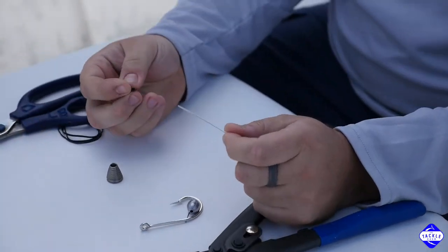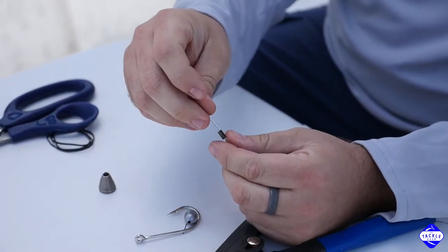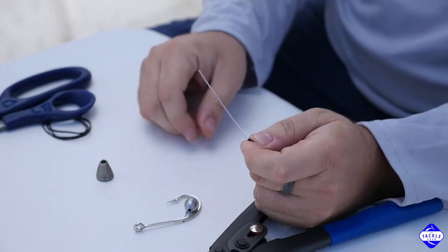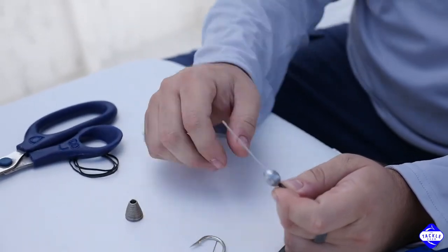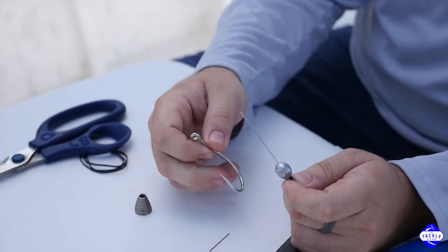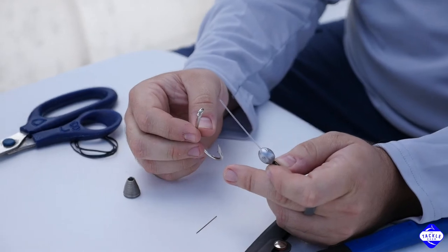Now to start the rig off, take one end of the mono and slide on your 1.3 sleeve. Next, grab your weight and put that on. Now, after that comes your J hook and make sure that your point is pointing towards the rest of the rig that you've made so far.